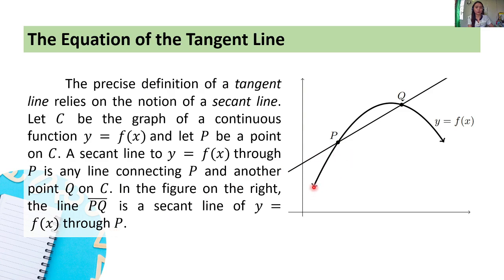So this is our function — the sketch of the graph of y = f(x). We have here points P and Q. Now class, if we recall, in geometry, we define the secant line as a line intersecting a circle in exactly two points.